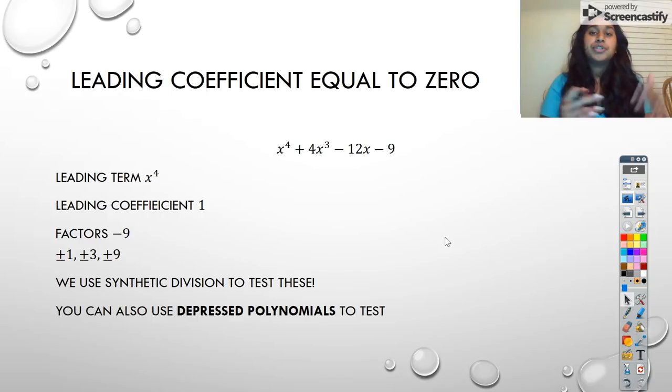And one new term we're going to be using today is called the depressed polynomial. And why are polynomials depressed? Because they're losing a variable. So what that means is we're going to do synthetic division, and its last line, that's our quotient, right? That's what we call the depressed polynomial.